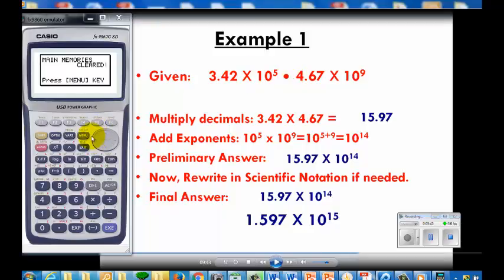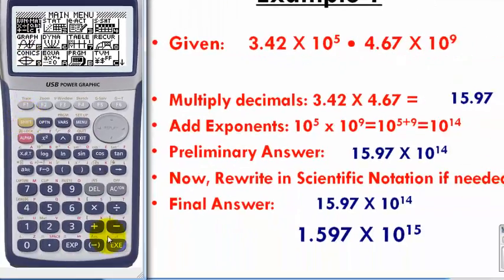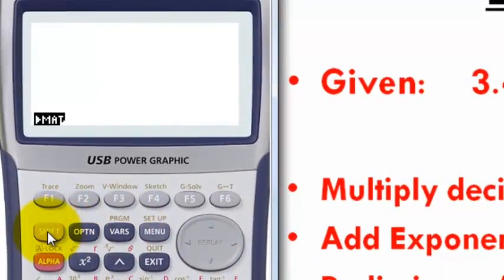So the first step that you have to do is to go to the main menu, go to run, and then we are going to set this one up so that it will be in scientific notation mode. To do that, we are going to access this setup here.